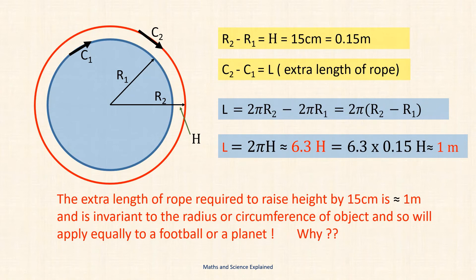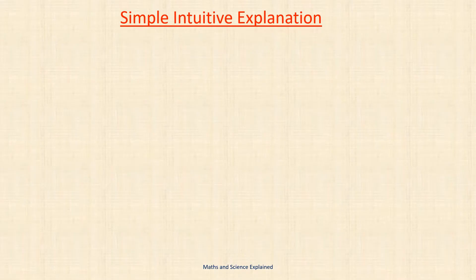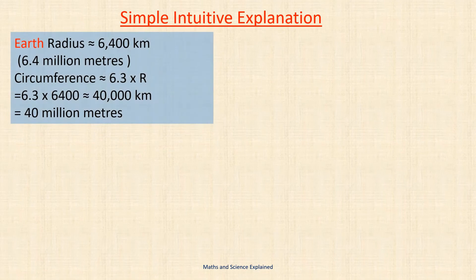Well let's have a go at doing this. We're going to look at two vastly different sized objects to gain some insight: the earth and a football. Now the radius of the earth is approximately 6,400 kilometers or 6.4 million meters. As discussed earlier its circumference is approximately 6.3 times this radius which gives us a circumference of 40 million meters.